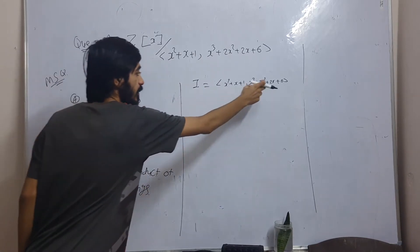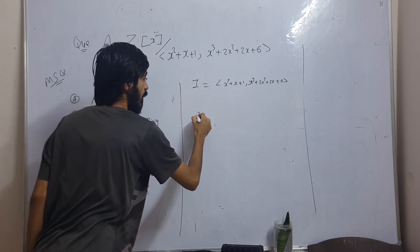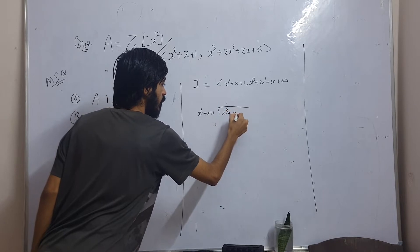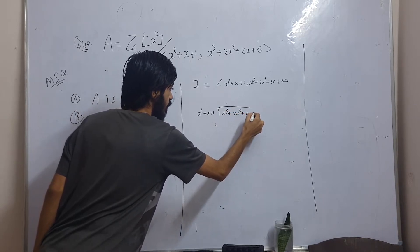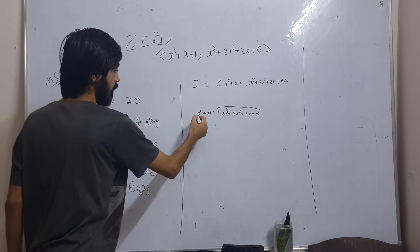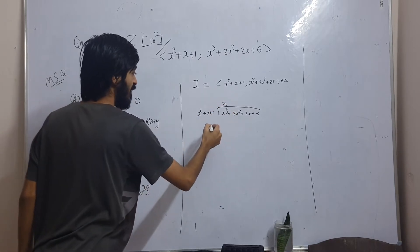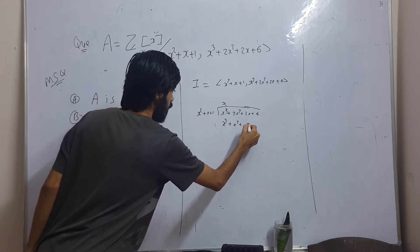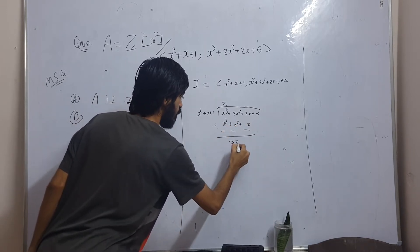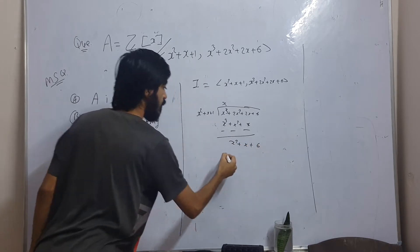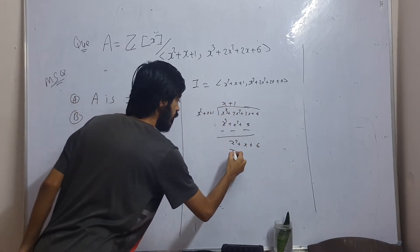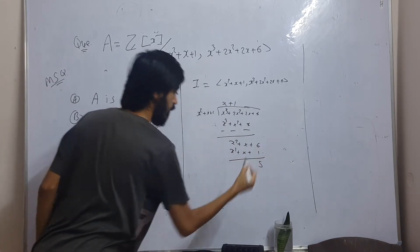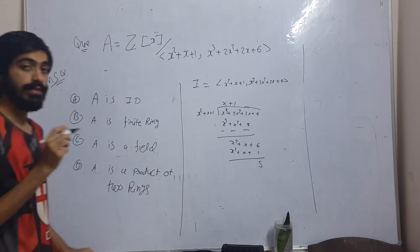To simplify, I'm going to divide x³ + 2x² + 2x + 6 by x² + x + 1. Since the leading term is x³ and we have x², we multiply by x to get x³ + x² + x. Subtracting gives x² + x + 6, and since x² + x + 1 is there, multiplying by 1 gives x² + x + 1, so the remainder is 5.